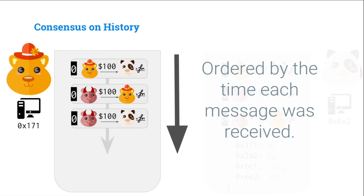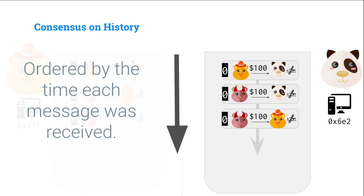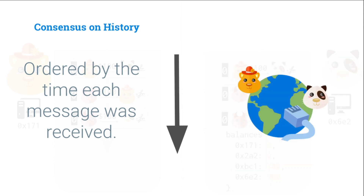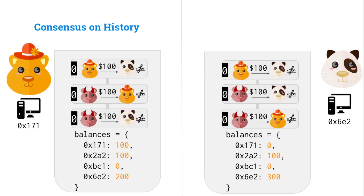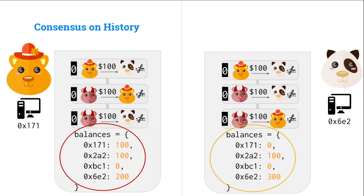The reason why this happened was because we are ordering the messages — these transactions — by the time they were received. But each node was receiving the transactions at a different time. Of course, this is going to happen because they're all across the world. So, it's impossible for this to be all we need for consensus. We had these balances and they got out of sync.